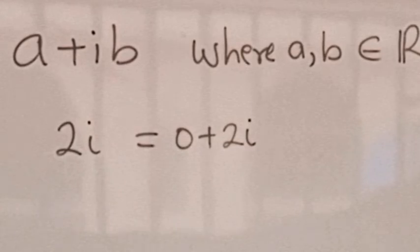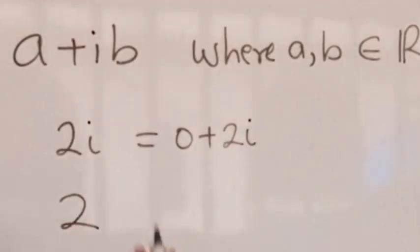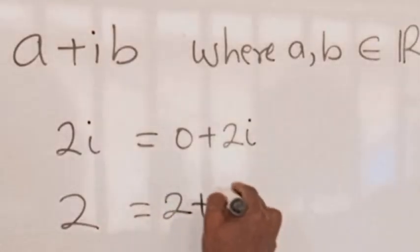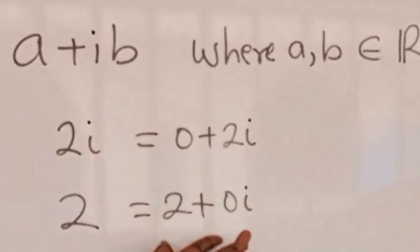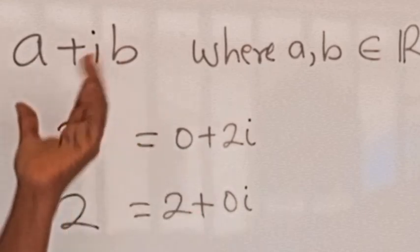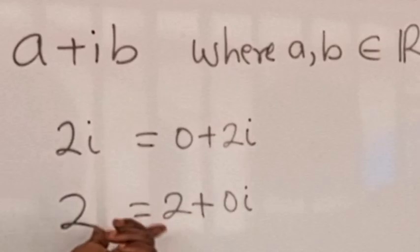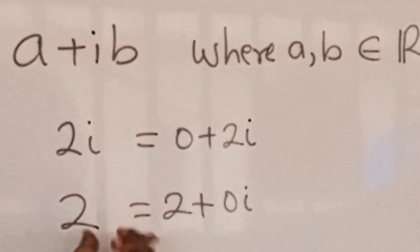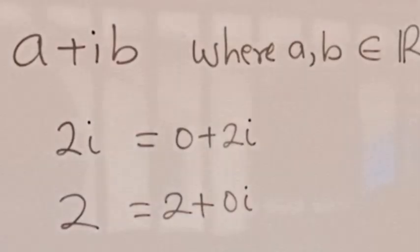Also, when the imaginary part is equal to zero, that is b equals zero, for example, two equals two plus zero times i. So two is a real number, and as you can see it is also a complex number. Therefore every real number is a complex number, but not every complex number is a real number. The set of real numbers is a proper subset of the set of complex numbers.